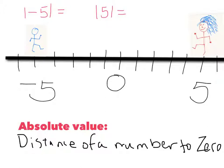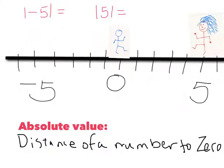Let's think of this as if you and your crazy-haired friend were walking on the number line. So, if you are going to walk on the number line and you are at negative 5, then you could walk 1, 2, 3, 4, 5 units. And now your friend wants to join you on 0.